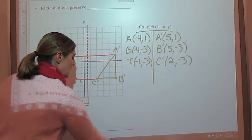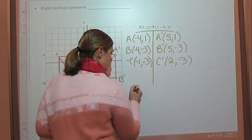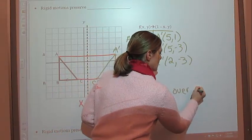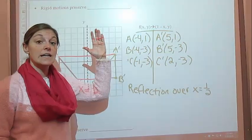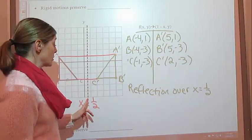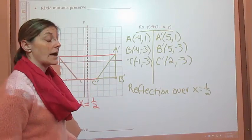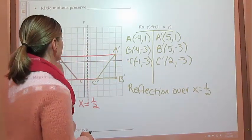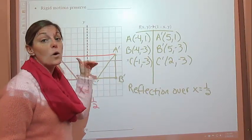So if this is at negative 1 and this is at 2, the distance between them is 3. So I want to go halfway — 1 and a half — then I have a point right here, and I can connect those with a straight line. So your line of reflection or line of symmetry is at x equals 1 and a half. This is x equals 1½ because it's a vertical line, and it goes through all of the points where x is 1½ and y can be anything.